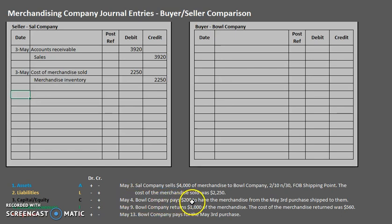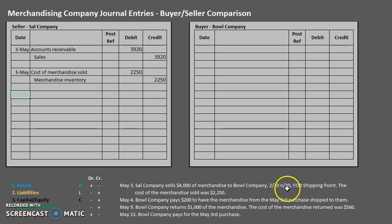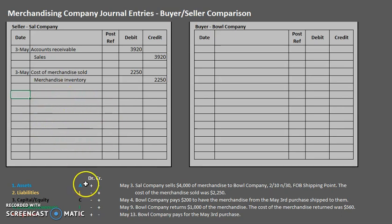On May 4th, Bull Company (the buyer) pays $200 to have the merchandise from the May 3rd purchase shipped to them. We need to go back to our FOB terms — in this case it's FOB shipping point, which means the buyer is responsible for paying shipping. So since it's the buyer's responsibility, there is actually no journal entry for the seller on May 4th.